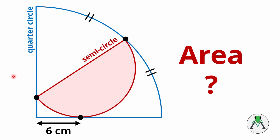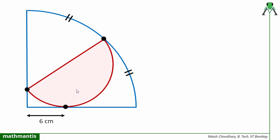Welcome back everyone. Let us discuss this interesting geometric problem. There is a quarter circle given to us, and there is a semicircle inside this quarter circle touching one of the sides of the quarter circle at a point which is at a distance of 6 centimeters from the vertex. There is one more condition: at another point where the semicircle is touching the quarter circle, this point divides the arc segment of the quarter circle into two equal parts. Based on this condition, we have to find the area of this semicircle.